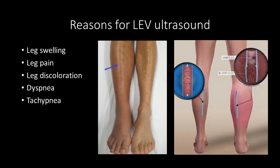Some reasons a lower extremity venous ultrasound would be ordered include leg swelling, leg pain, leg discoloration, dyspnea, or tachypnea. Those are the most common indications, along with pulmonary embolism and also pulmonary embolism in pregnant women. We do not want a blood clot to go to the heart or the lungs because that can be very lethal to a patient.